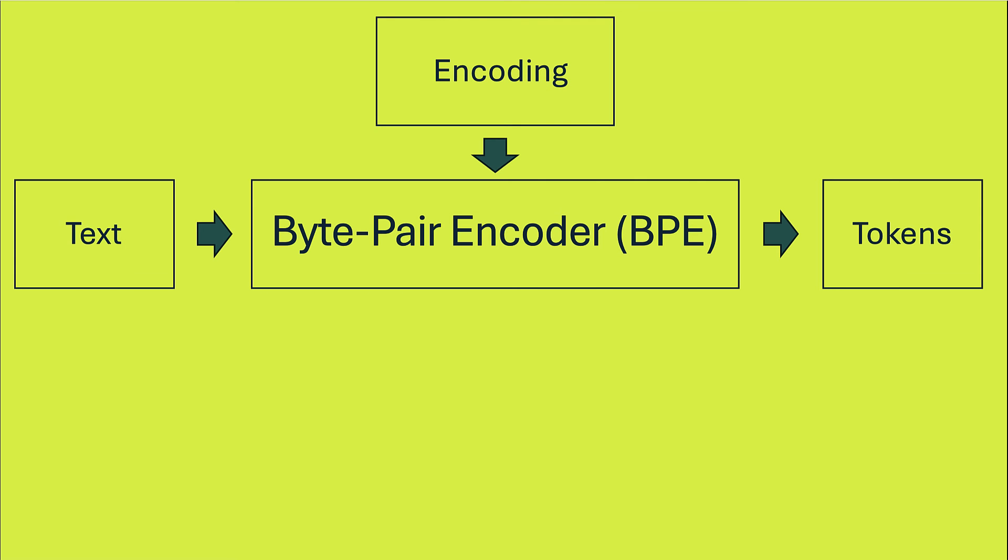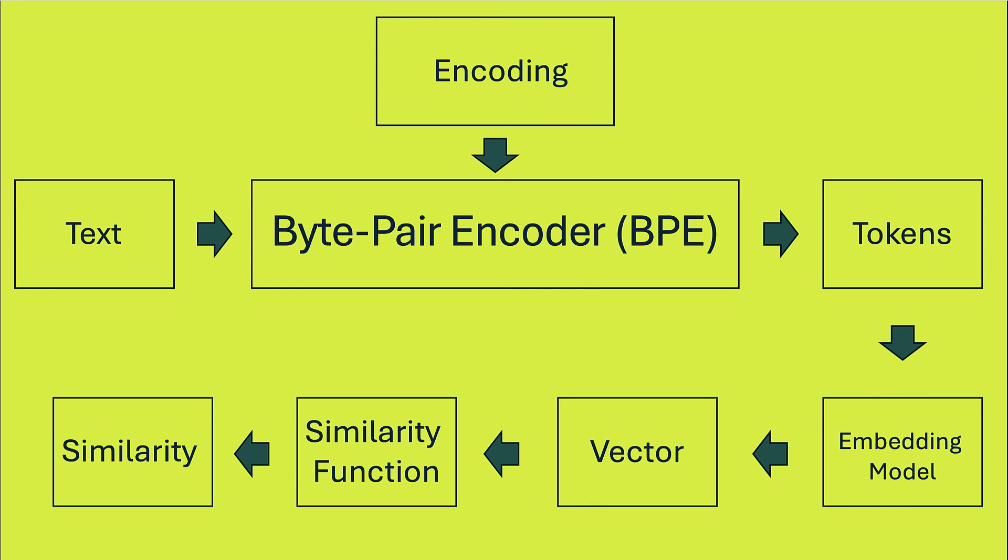We have some text. We use an encoding to produce tokens with a byte-pair encoder. These tokens are given to an embedding model which returns a vector in its product space. We can compare two vectors using a similarity function like cosine similarity to show how related they are.